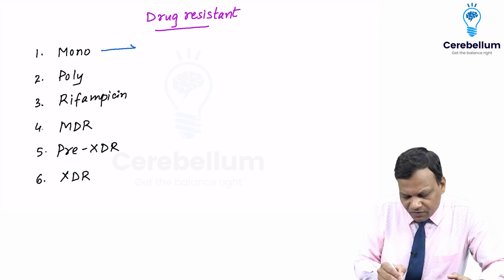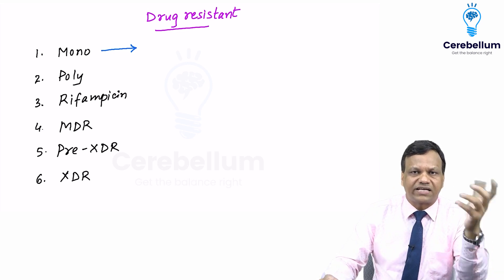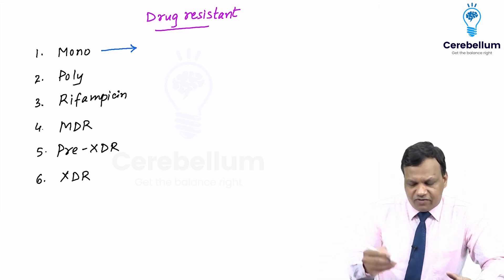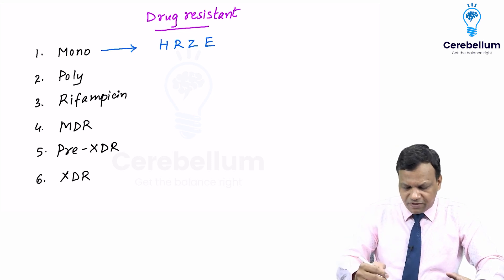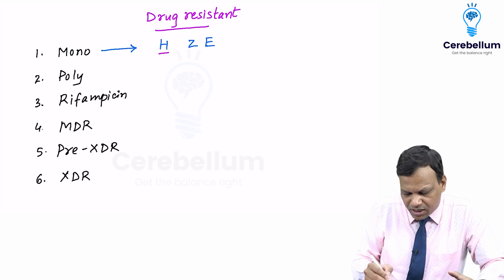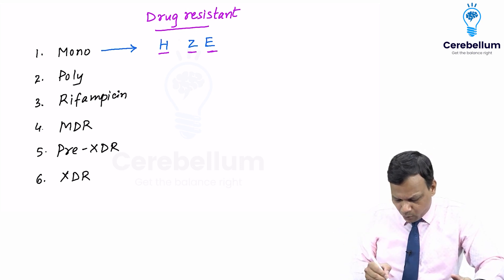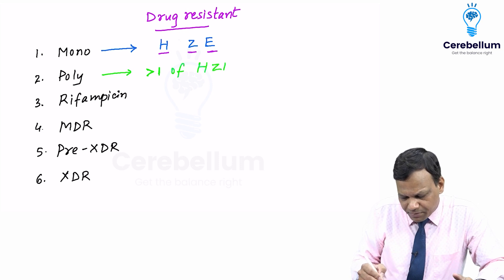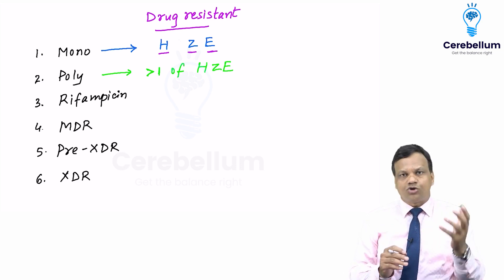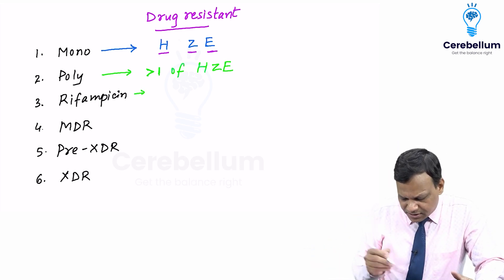Mono drug resistant TB: when the mycobacterium is resistant to any one of the first-line oral drugs except rifampicin. The four first-line oral drugs are HRZE; removing rifampicin, that means resistance to either isoniazid, pyrazinamide, or ethambutol — any one. Poly drug resistant TB: resistant to more than one first-line oral drug except rifampicin — so any combination among H, Z, or E.